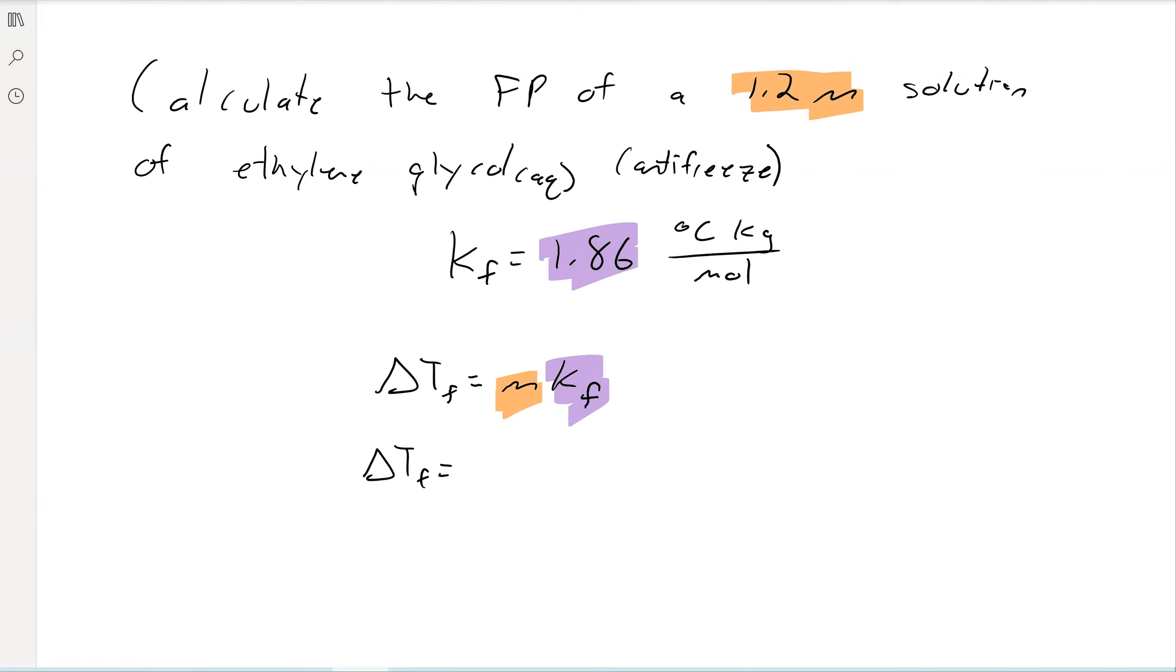And so then we have 1.2 molal, and if you think about the units of molal, they're moles of solute over kilograms of solvent. So moles over kilograms. And then the molal is going to be 1.86 degrees Celsius kilogram per mole. Mole and mole cancel out, kilogram and kilogram cancel out. And so then we get a delta T_F of 2.2 degrees Celsius.